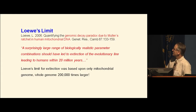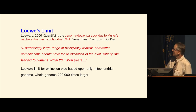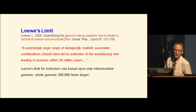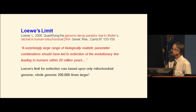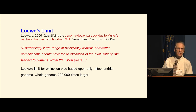Lowe is a scientist who took that issue and analyzed it in terms of just human mitochondrial DNA — an infinitesimally small part of the human genome. He concluded that a surprisingly large range of biologically realistic parameter combinations should have led to an extinction of the evolutionary line leading to humans within 20 million years. But he's only looking at a tiny fraction of the genome. If you consider all the linkage blocks, not just this one, the problem becomes very significant even in the near term. The near-neutral box gets bigger — the part of the genome that's unselectable gets broader — depending upon different types of noise, but the biggest interfering factor for selection is the other mutations.